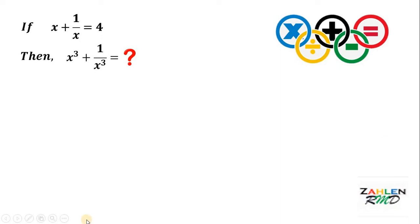Let's answer this question together. Let's use the available given. So, we have x plus 1 over x equals 4.